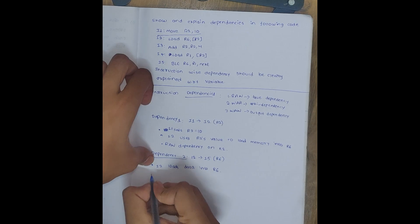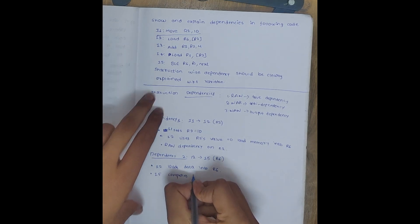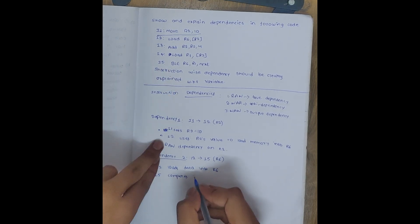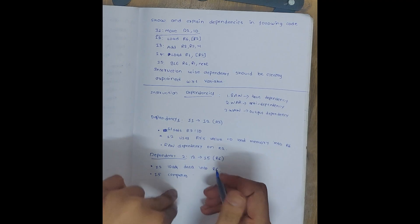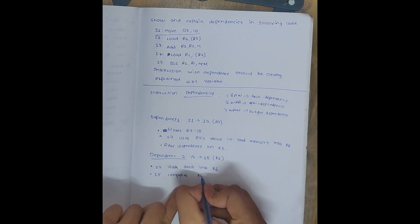Then I5 compares - here it compares which one? I5 compares R6 and R1, right? R6 with R1. And this one also we can say as RAW dependency.